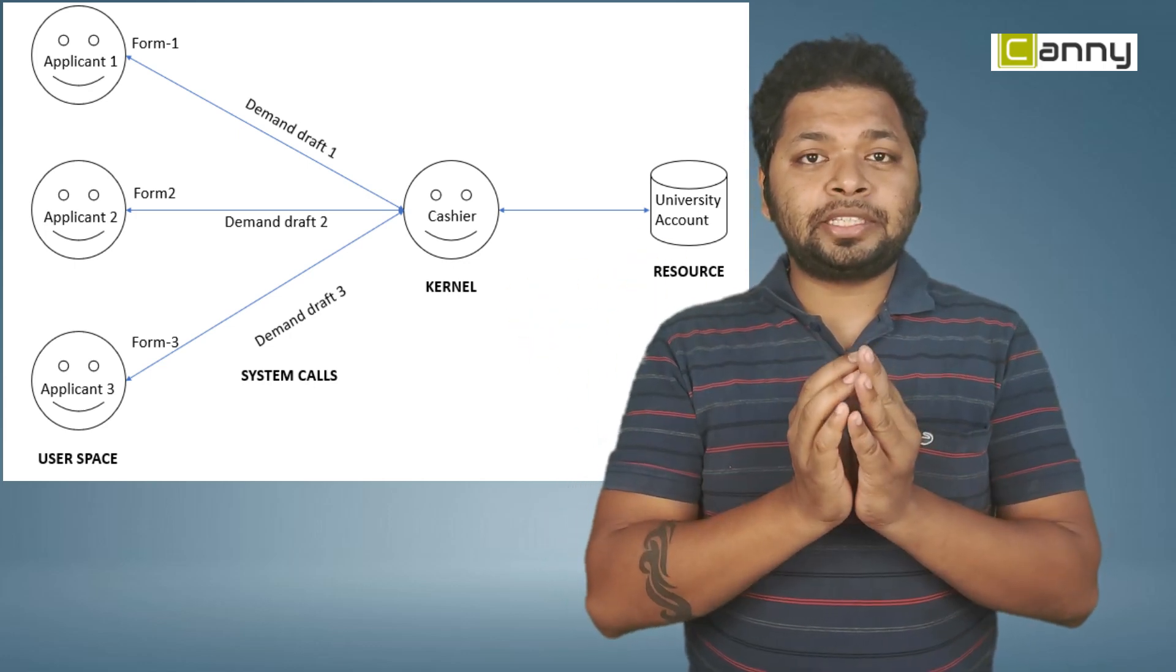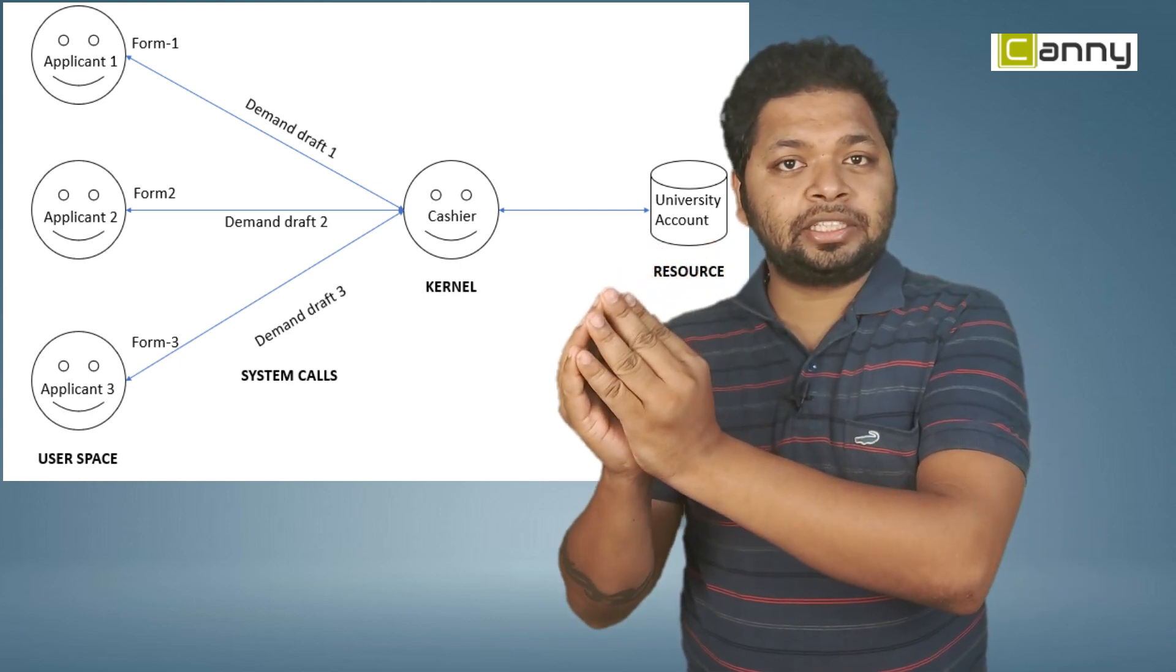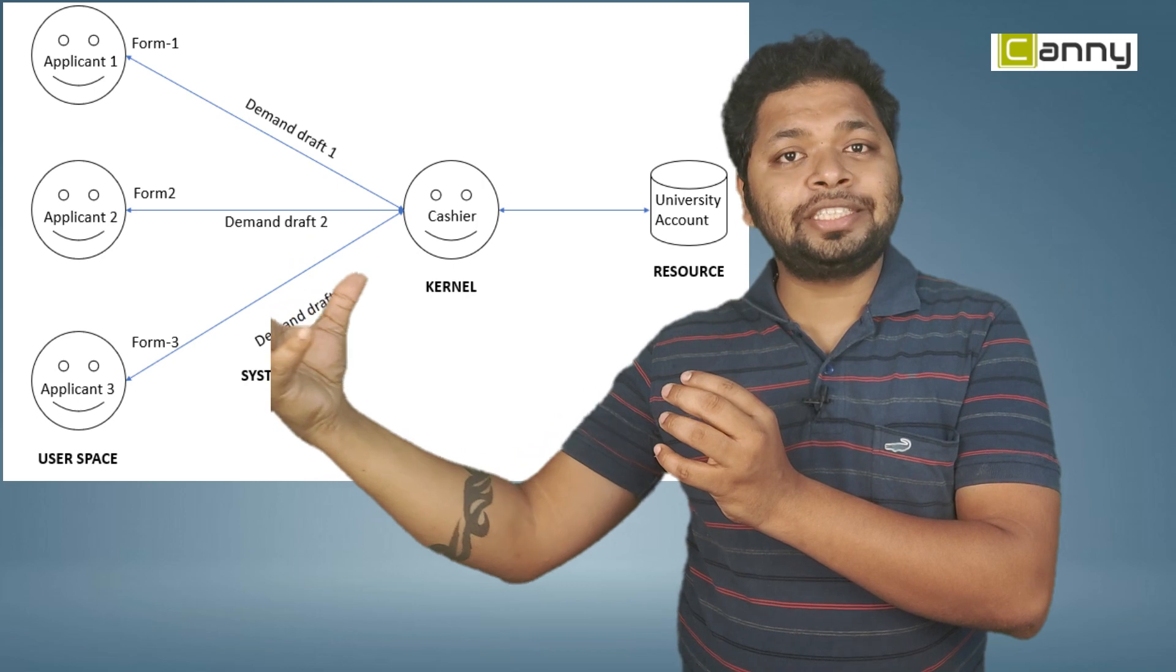So now, user space—you knew that the form and the demand draft is the user space here. The manager or the cashier is the kernel, and the resource is the university's account.